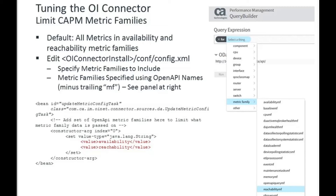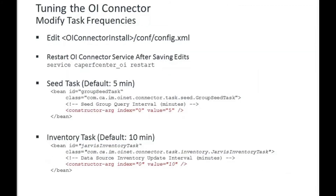You can send all metric families by commenting out the constructor argument entirely, which works fine at lower scale. At higher scale, the initial release restricts to availability and reachability to leave room for other product data in the Jarvis platform, with the option to add more metric families if desired. All task timing — seed task, inventory task, and others — can also be configured through config.xml, though a service restart is required after changes.